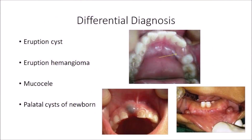In the differential diagnosis, it can resemble an eruption cyst; however, the eruption cyst is produced in association with an unerupted tooth — the tooth has erupted out of bone but is held by thick fibrosed gingiva. When there is trauma to the eruption cyst, it forms a blue-tinged lesion called an eruption hemangioma, which is also associated with an unerupted tooth. The gingival cyst of newborn, however, is not associated with a tooth and can thus be distinguished.